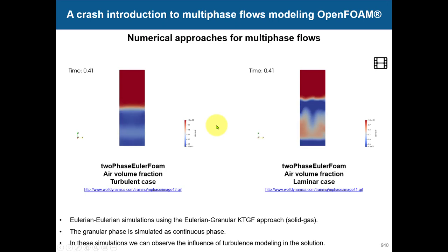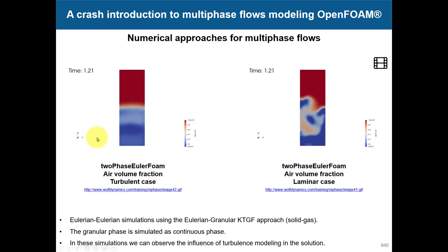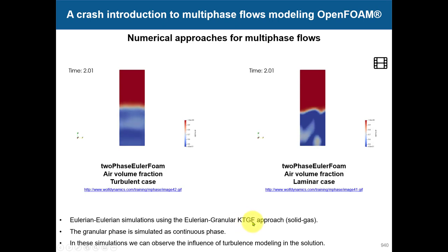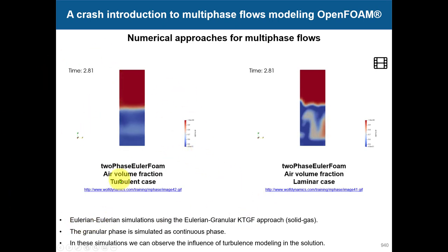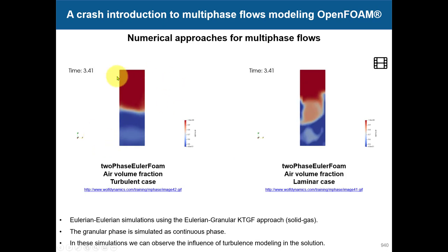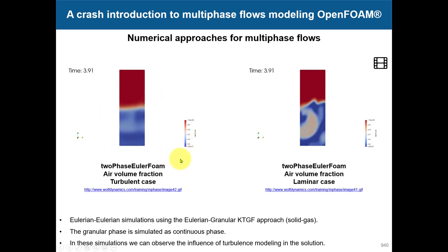When you have billions of particles and solving them individually is too expensive, you can treat those particles as a continuous phase. This is called Eulerian granular kinetic theory, or TGF — Kinetic Theory of Granular Flow (KTGF). It uses an approach similar to the kinetic theory of gases. It's a complex model with many variables to calibrate, but you can get very good agreement with experiments.